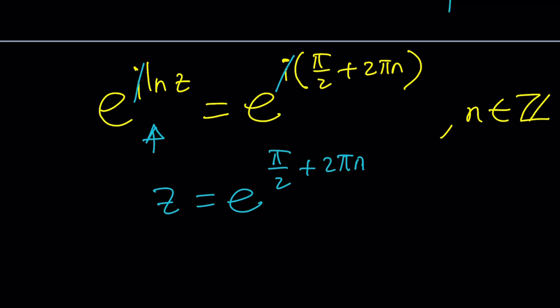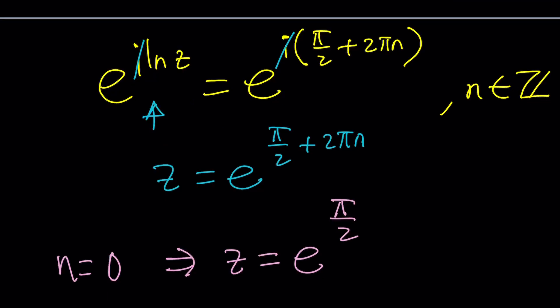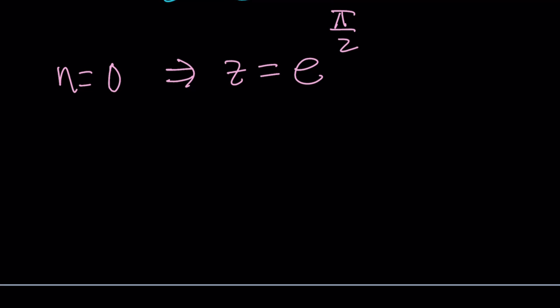But what happens for special cases? For example if n is 0 then z is going to be e to the power pi over 2 which is a real number. By the way all the values of z are real. How come we can get an i from there? You just take a real number and just stack them up like a z to the power z to the power z dot dot dot and you get an imaginary number. Okay.